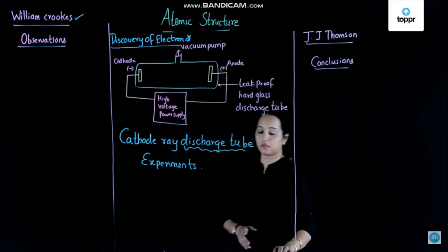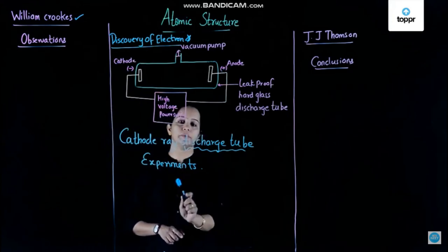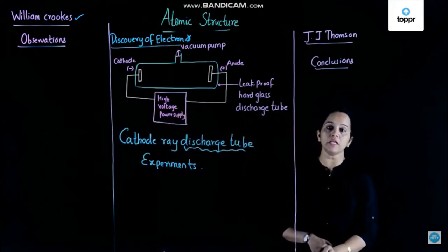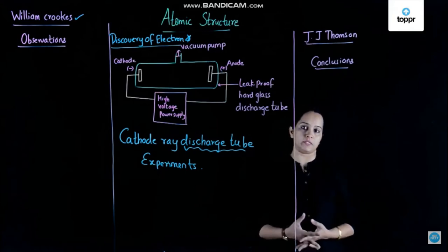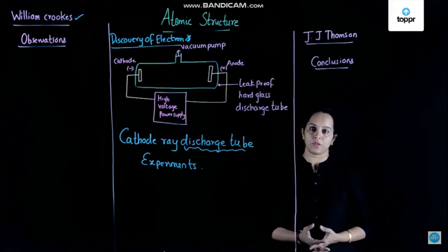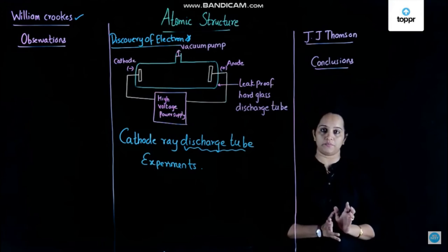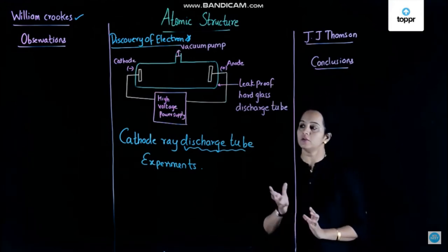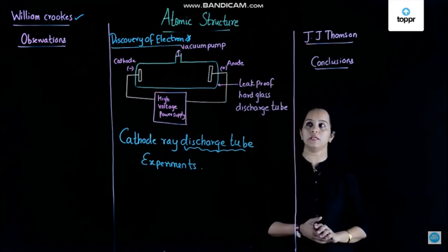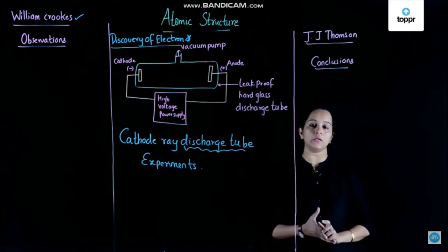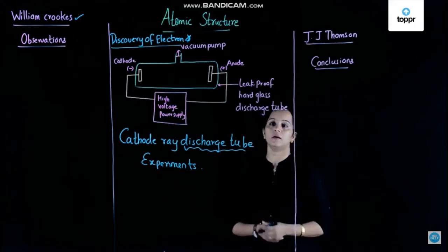Sir William Crookes was conducting many cathode ray discharge tube experiments, using which the discovery of the electron was possible. Now what is this cathode ray discharge tube experiment? The first thing is: what is this discharge tube? A discharge tube is exactly similar to the tube light which we use at home — somewhat similar in shape. It is a leak-proof, hard glass discharge tube and it is cylindrical in shape. Now let us start with the construction of this discharge tube.